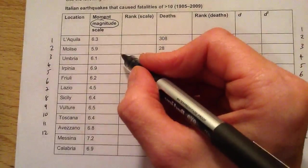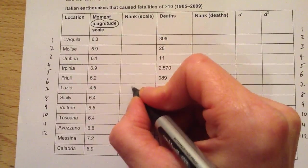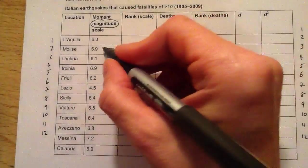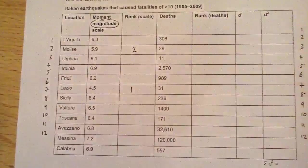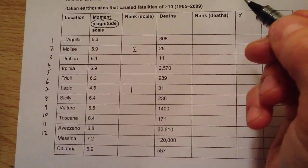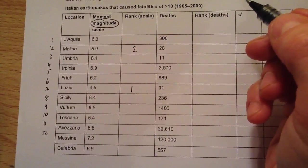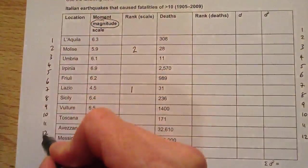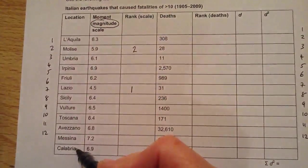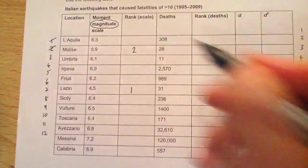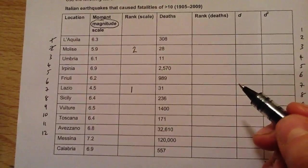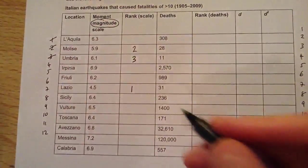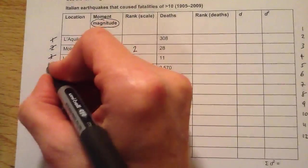We start by ranking the magnitude from the lowest, giving it rank number one. The lowest magnitude is in Lazio — we give that a one. Then Melise at 5.9 gets number two. A trick I use to keep count: I write numbers one to twelve down here because I've got twelve locations, and I cross off the ranks as I've used them. We continue to rank the earthquakes like so.